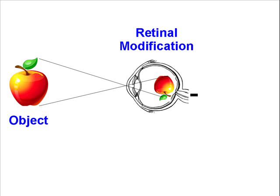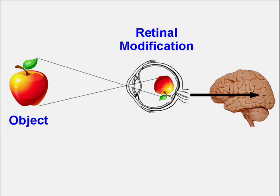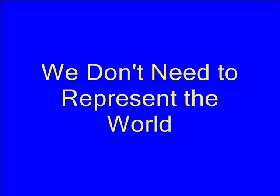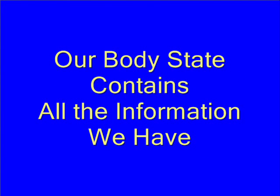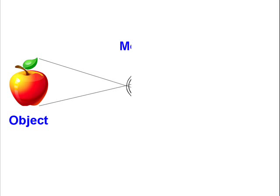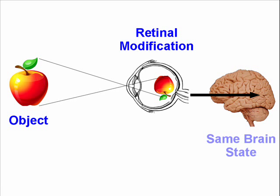For example, to see an apple is to experience an apple modifying our retina. Why is this an evolutionary mystery? It's an evolutionary mystery because evolution responds only to behavior — if we behave in the right way, we'll survive, and if we don't, we won't. To behave in the right way, it's not necessary to have a representation of the external world; it's only necessary to properly respond to each stimulus we receive. As our body state already contains all the information we'll ever have, why not respond directly to the body state, as opposed to going to the trouble of constructing a model of the external world and then responding to that model? That requires extra processing.